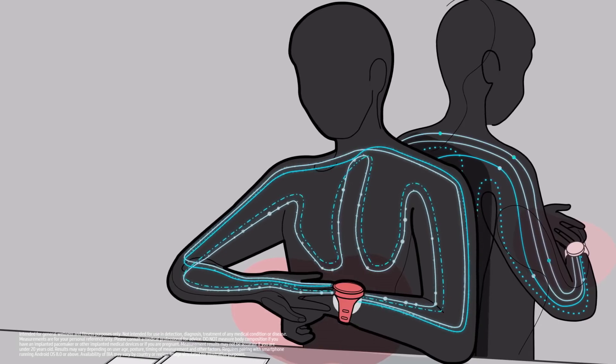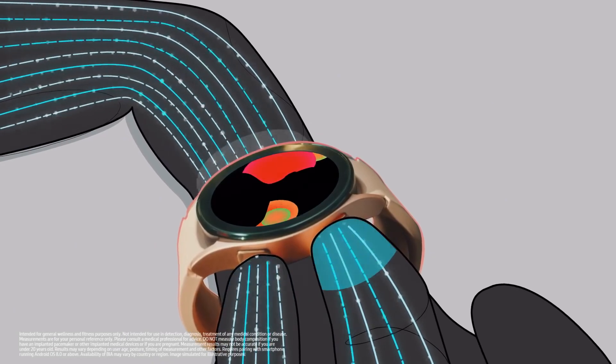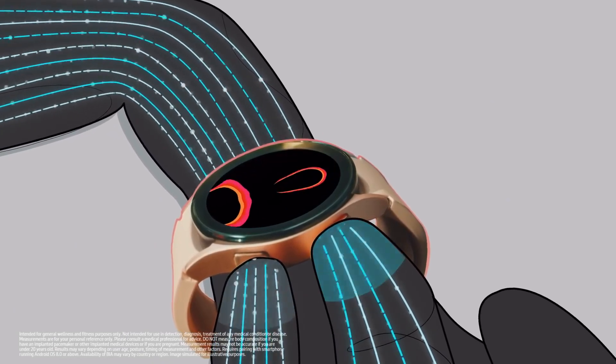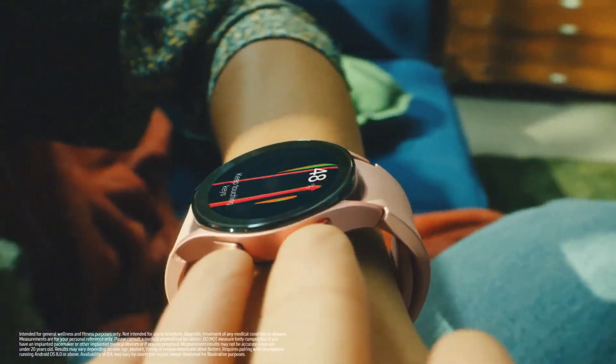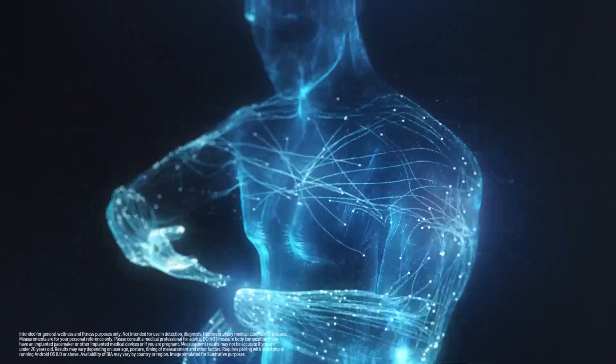When you wear the Galaxy Watch, the two electrodes on the back naturally come into contact with your skin. If you hold the side electrodes of the watch with two fingers, the BIA sensors send and receive electrical signals that measure body composition data.